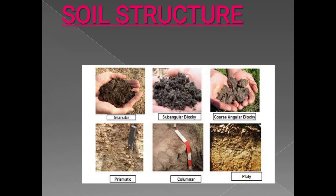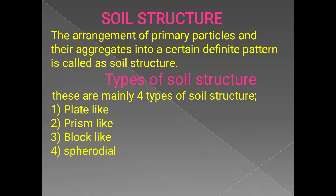What is meant by soil structure, what are the different types, and how to identify them? Soil structure is the arrangement of primary particles and their aggregates into a certain definite pattern. There are five primary particles, and soil structure is totally dependent upon soil texture — the relative proportion of sand, silt, and clay particles present in the soil.